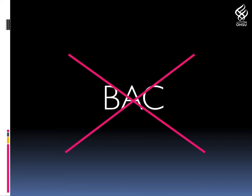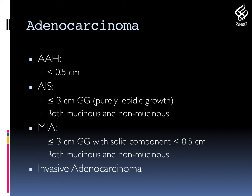The term bronchoalveolar carcinoma is no longer used, and I would like you to eradicate that term from your memory. Adenocarcinoma is now divided into AAH — atypical adenomatoid hyperplasia — which are tumors smaller than 0.5 cm and solely comprised of ground glass. Adenocarcinomas in situ are tumors smaller than 3 cm, purely ground glass, and can be mucinous or non-mucinous. Minimally invasive adenocarcinomas have a ground glass periphery not larger than 3 cm with a solid component smaller than 5 mm. And lastly, invasive adenocarcinomas.